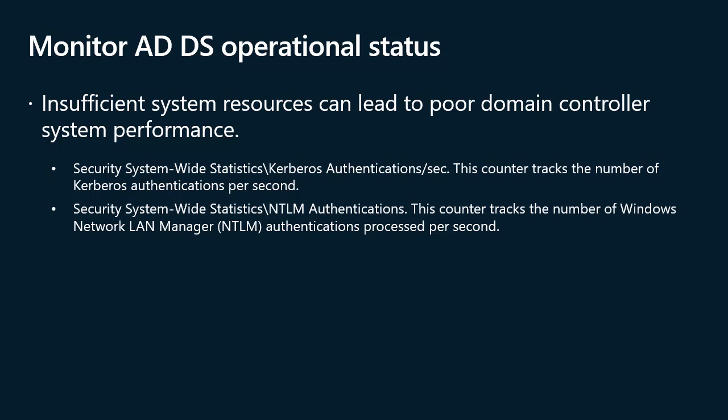With Performance Monitor, you can review current performance statistics or historical data gathered using data collector sets, including processor, memory, disk, and network-specific counters. On a domain controller, you should also monitor NT Directory Service (NTDS) object counters, including: Security System-Wide Statistics — Kerberos Authentications per second, which tracks the number of Kerberos authentications per second; and Security System-Wide Statistics — NTLM Authentications, which tracks the number of Windows NTLM authentications processed per second. If you use System Center Operations Manager, you can deploy the Active Directory Domain Services Management Pack to monitor and analyze domain controller operations, providing alerts, views, tasks, and reports for a variety of ADDS functions.